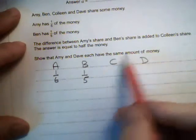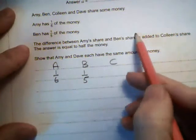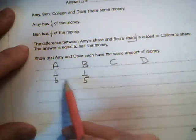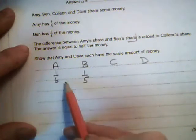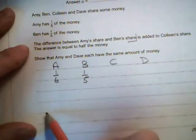Colleen and Dave, we don't know. Now, the difference between Amy's share and Ben's share. So let's just stop there. The difference between Amy's share and Ben's share means the difference between these two. So that means we're going to have to find a subtraction: 1/5 take away 1/6.